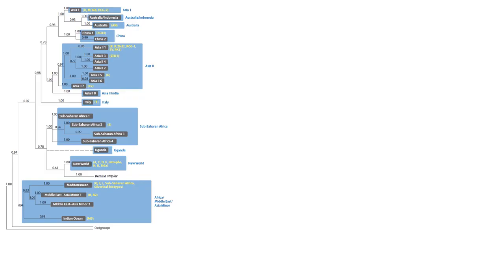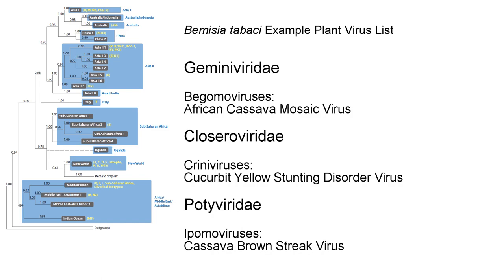Bemisia tabaci has several very important details associated with its pest status. For example, it is a known vector of more than 150 plant viruses in three separate genera of three separate viral families: the begomaviruses of family Geminiviridae, the criniviruses of family Closteroviridae, and the ipomoviruses of family Potyviridae.